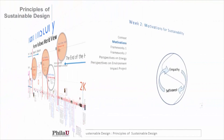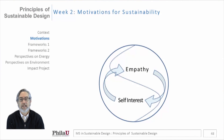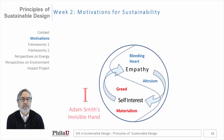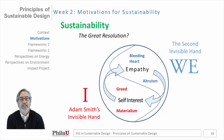In week two we begin to explore the deeper motivations for sustainability and the conflict between empathy and self-interest, between greed and altruism, between materialism and bleeding heart liberalism. We look at Adam Smith's invisible hand of wealth and the emerging second invisible hand of wealth, and perhaps sustainability could be the great resolution of those two forces.